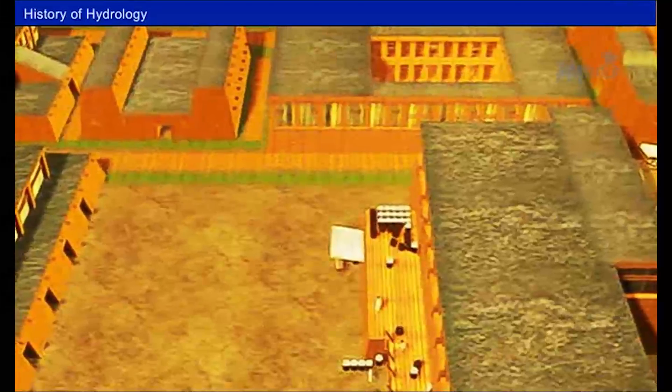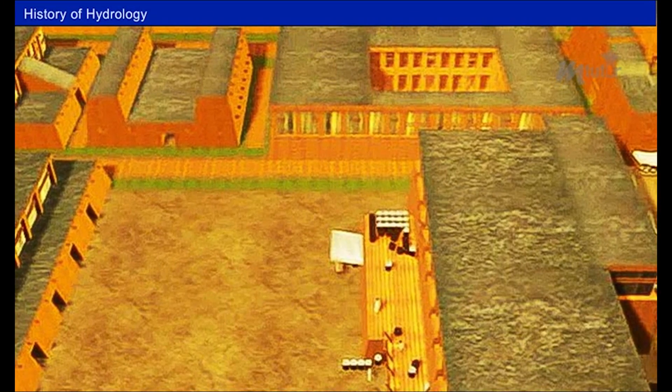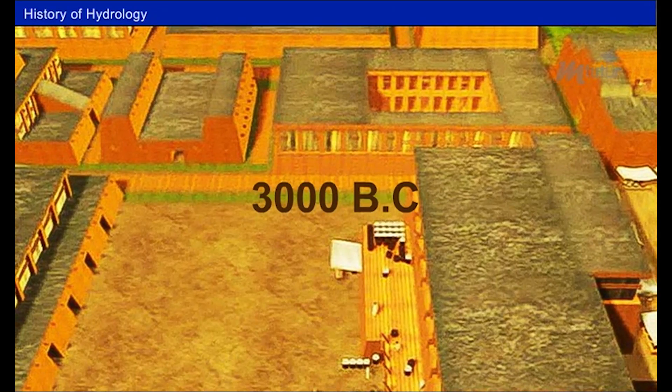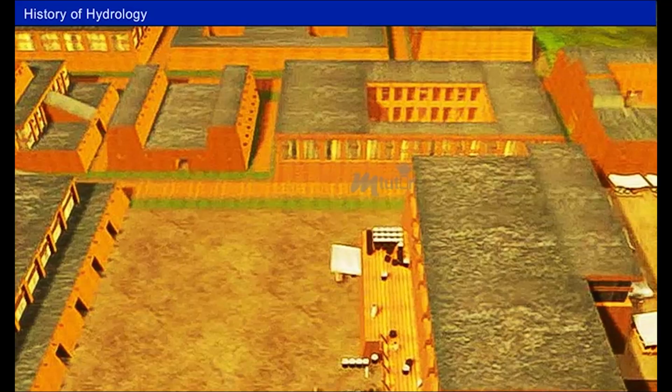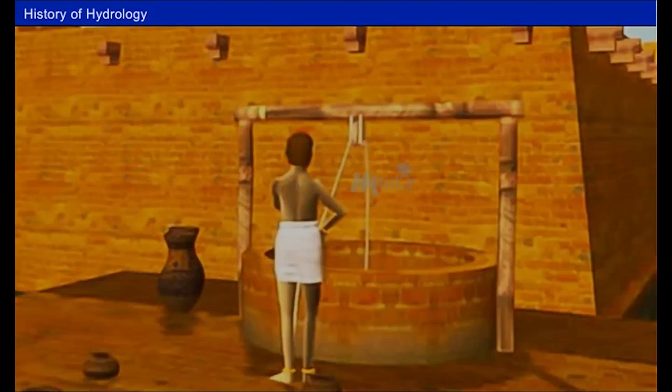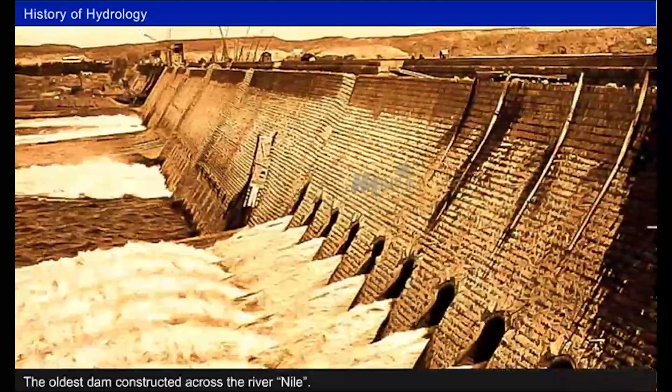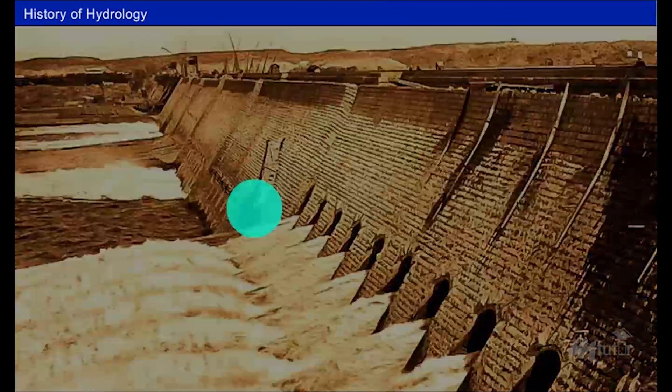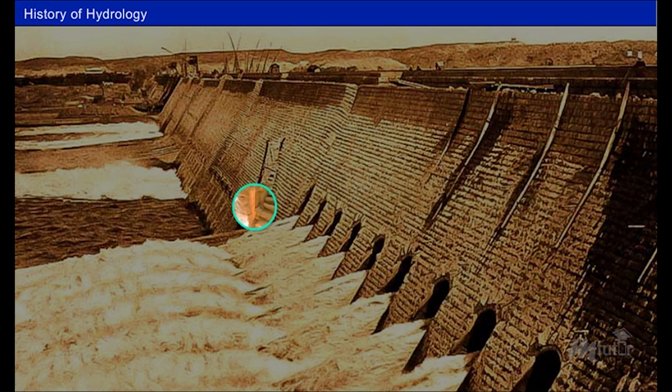Based on the archaeological evidence at Mohanjadaro, it has been found that around 3000 BC people of Indus Valley had good knowledge of groundwater development through wells. During this period, the oldest dam was constructed across the river Nile.